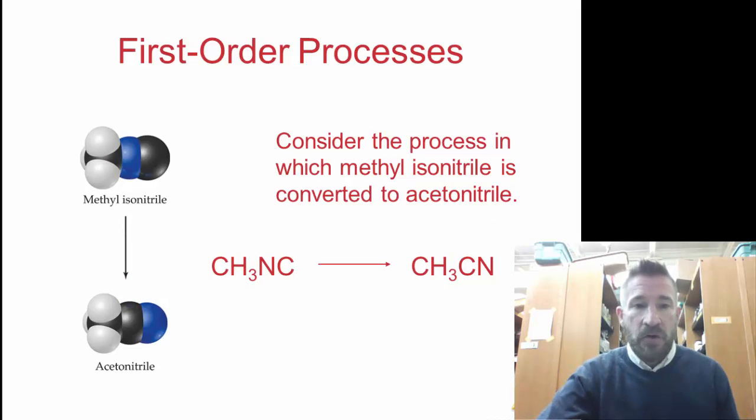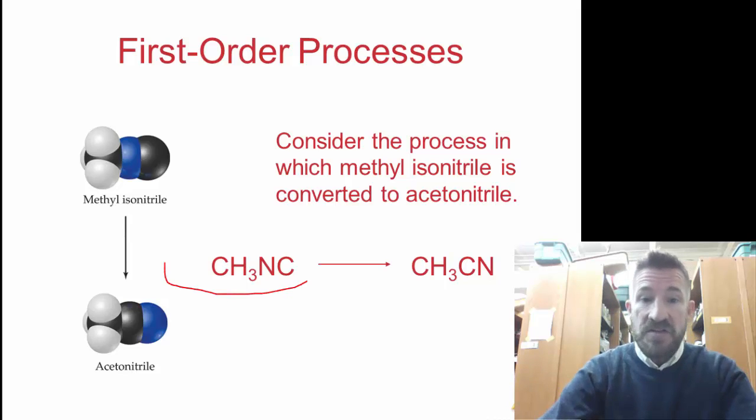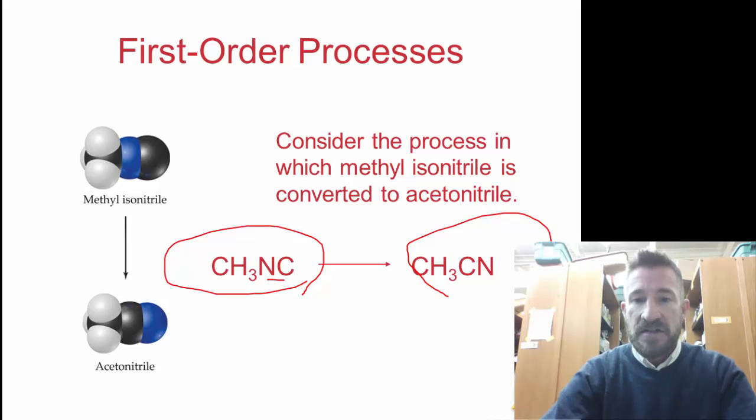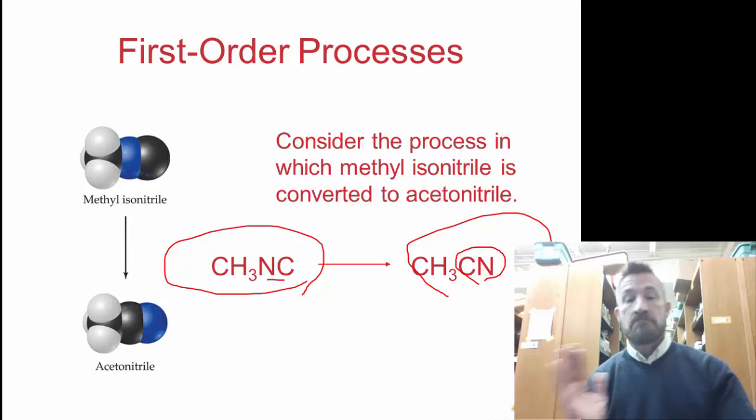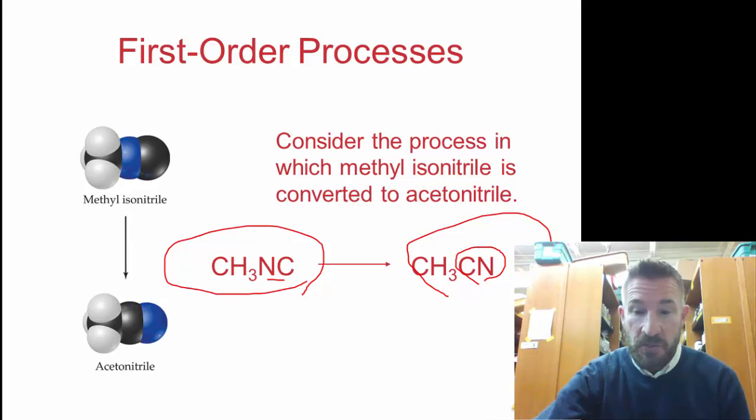Let's look at an example. Here's an example of one reaction. We take methyl isonitrile and it changes to acetonitrile. Consider this process and you see this is basically what we call unimolecular. There's only one substance reacting and it goes to a different substance. Basically, the NC turns around to CN. This part of the particle just switches places.